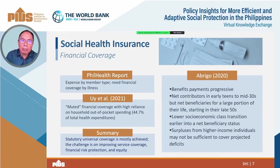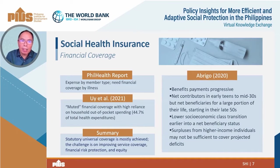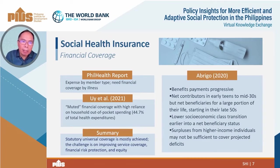Looking at other dimensions of the PhilHealth program, Mike Abrigo's study released in 2020 did informative simulations. He finds that the benefit packages are progressive. The study also showed that while individuals are net contributors in their early teens to mid-30s, they become net beneficiaries for a large portion of their lives starting in the late 50s. Furthermore, the lower socioeconomic class transitions into net beneficiary status earlier. He also pointed out that surpluses from high-income individuals may not be sufficient to cover a projected deficit, putting pressure on the system's financial sustainability.